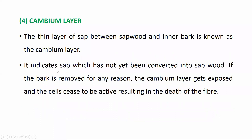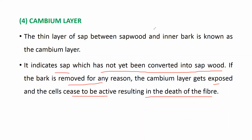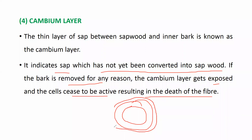The cambium layer indicates sap which has not yet been converted into sapwood. If the bark is removed for any reason, the cambium layer gets exposed and the cells cease to be active, resulting in the death of the fiber. The cambium layer contains sap, and inside it is the sapwood.